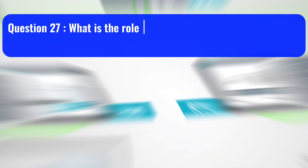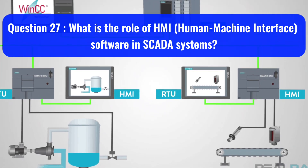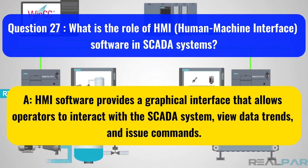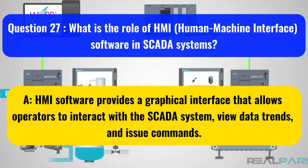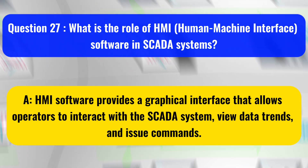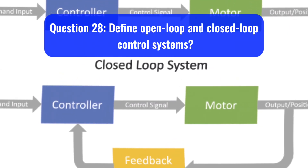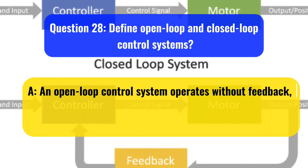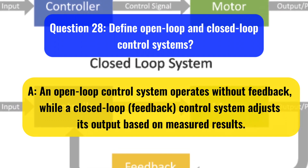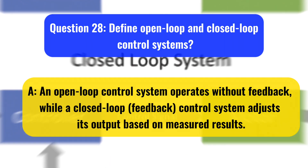Question 27: What is the role of HMI (Human-Machine Interface) software in SCADA systems? HMI software provides a graphical interface that allows operators to interact with the SCADA system, view data trends, and issue commands. Question 28: Define open-loop and closed-loop control systems. An open-loop control system operates without feedback, while a closed-loop feedback control system adjusts its output based on measured results.